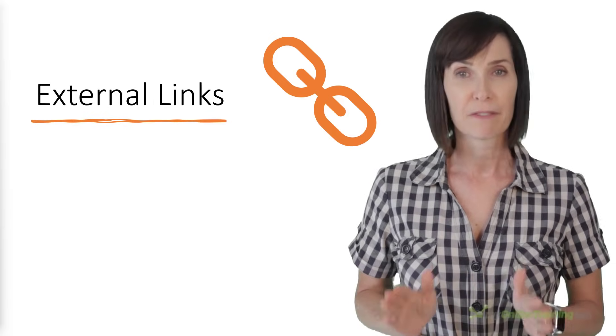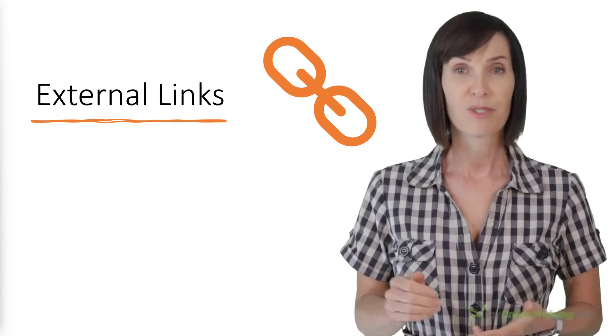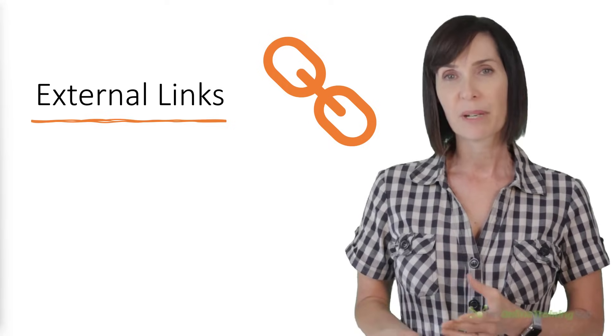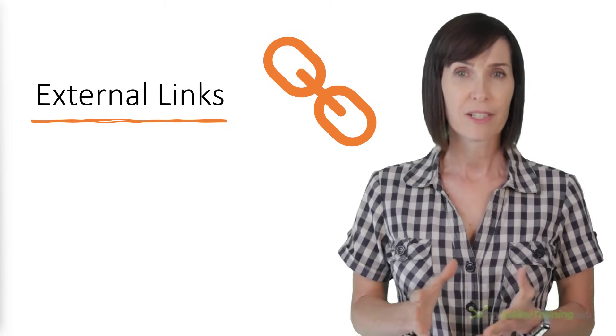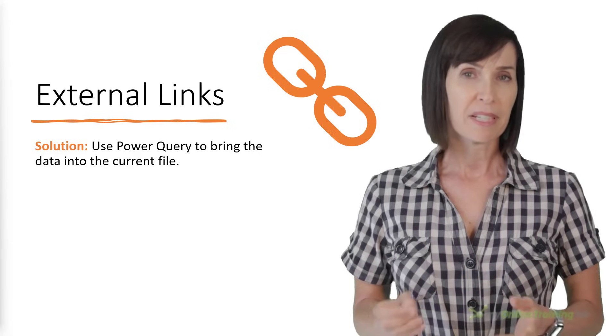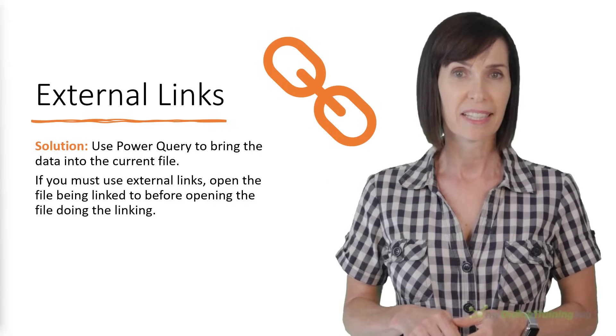As a general rule, external links should be avoided. Links to external Excel files aren't only slow to calculate, they're also easily broken. Plus, many functions can't evaluate on a closed workbook. Internal links can also slow down calculation, so the solution is to use Power Query to bring the data into the current file. And if you must use external links, open the file being linked to before opening the file doing the linking.